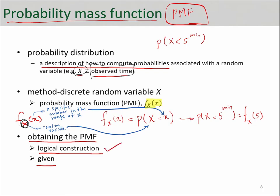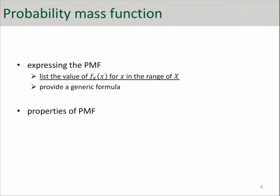When you construct it logically, it's going to be a list of values of f_X(x) for x in the range of that random variable X. For example, it's going to be something like this: f_X(x) equals 0.1 when x equals 0, 0.05 when x equals 1, 0.2 when x equals 2, and 0.65 when x equals 3. And that's a valid PMF function.